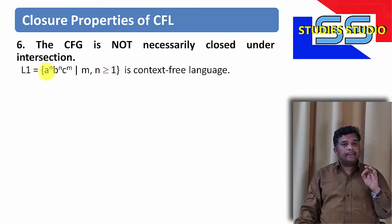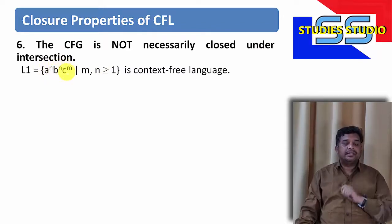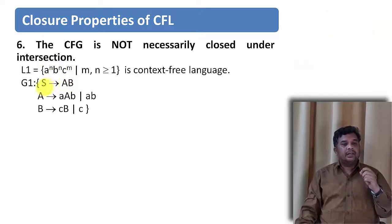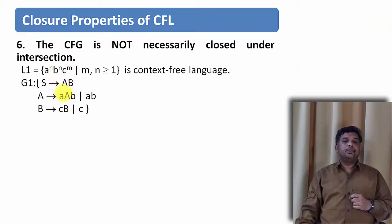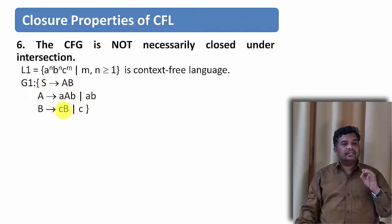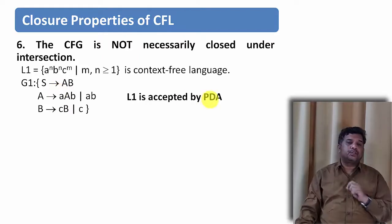You can see here the number of a's is equal to the number of b's. Whatever may be the number of c's, it may appear. This can be represented by this particular grammar, where S derives ab, A derives aab or ab, and B derives cb or c. This grammar is a context-free grammar and can be accepted by a pushdown automata.